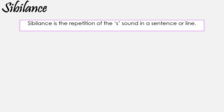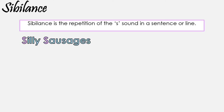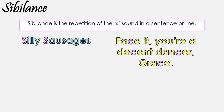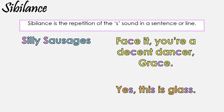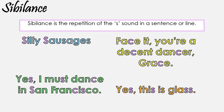And finally, sibilance. Sibilance is the repetition of the S sound in a sentence or a line. It can be at the beginning of words, such as 'silly sausages.' It can be within words, such as 'face it, you're a decent dancer, Grace.' Or at the end of words, such as 'yes, this is glass.' Or it can be a mixture of all three, such as 'yes, I must dance in San Francisco.'